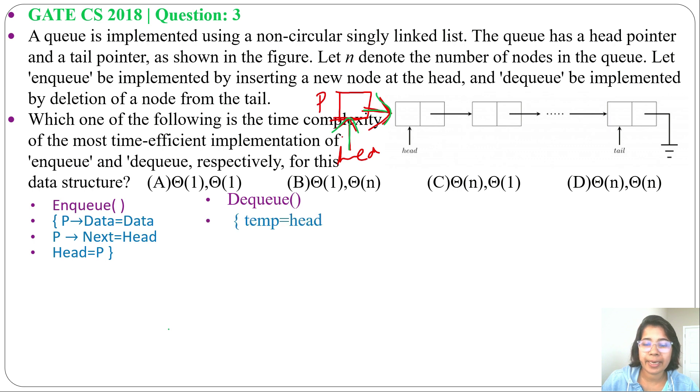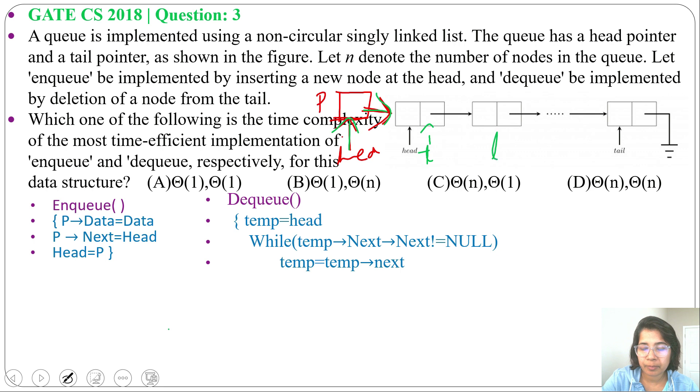Next we will do the dequeue operation. Temp equals to head. Then while temp next next not equals to null. So initially this is our temp, then temp next next is not equal to null. Then temp will be temp next. Next temp will be this, next temp will be next node like this. Then when temp next equals to null, suppose there is a node let it be T, its next is null. So here it's null, then tail will be temp. So we will delete that, this tail pointer will point to temp.